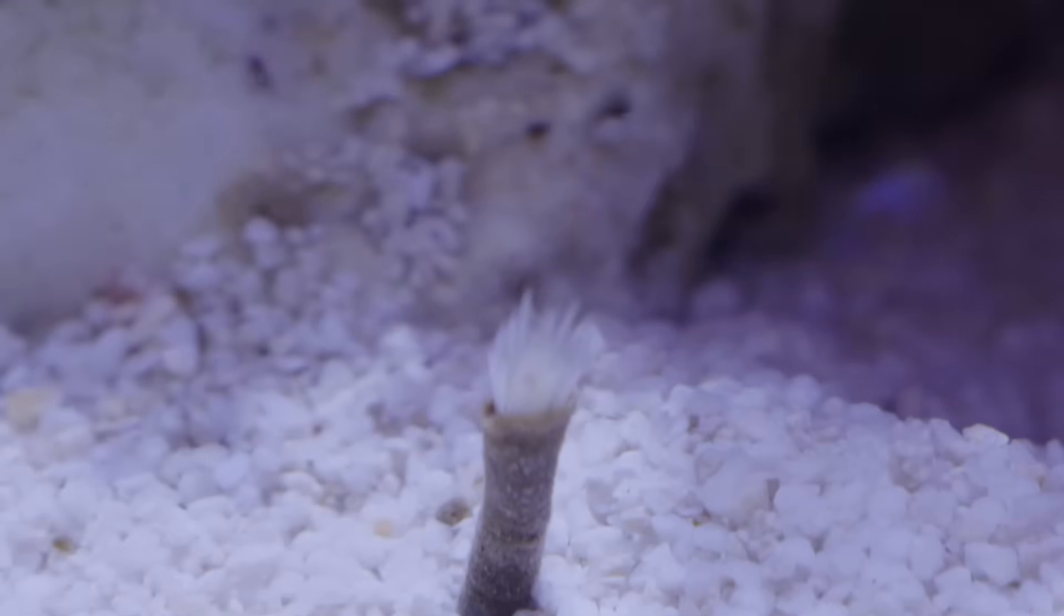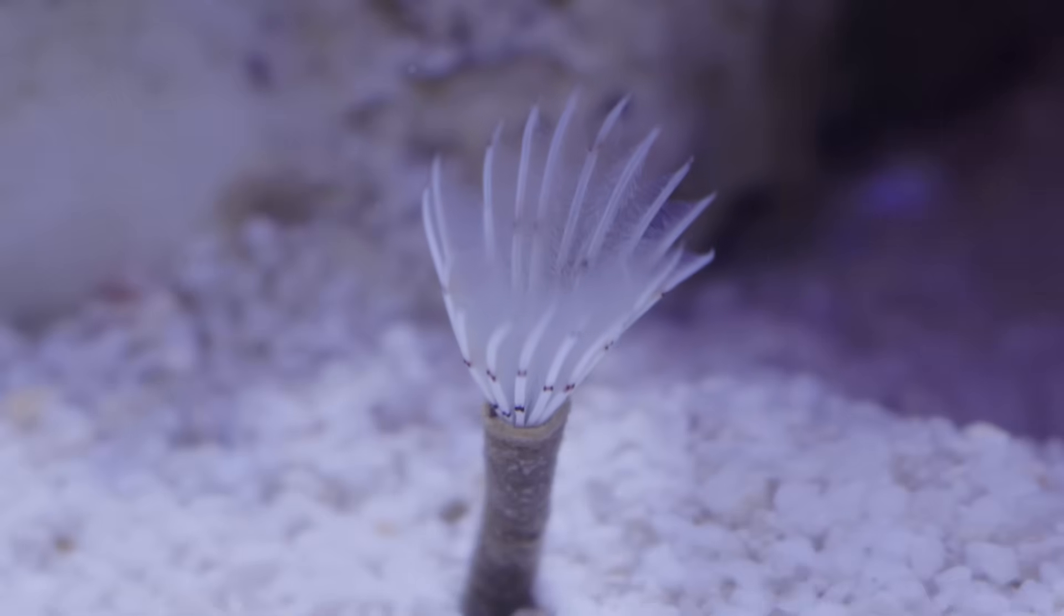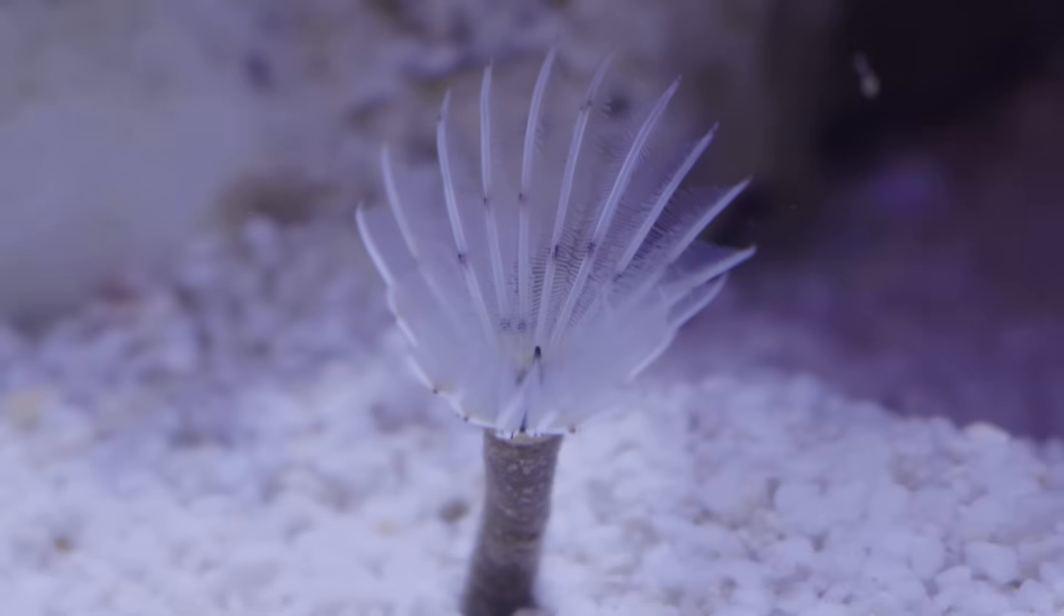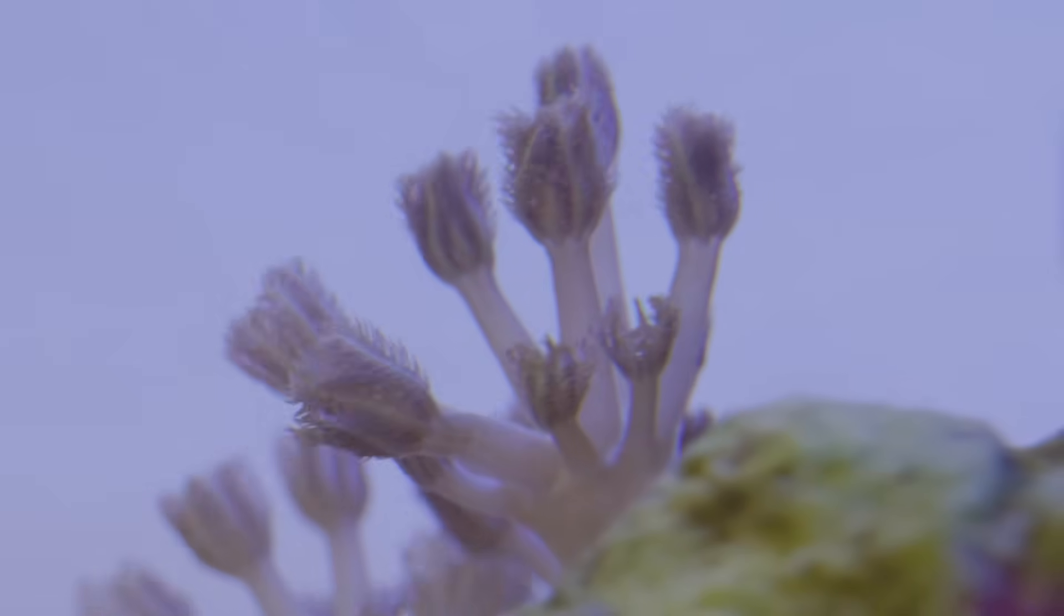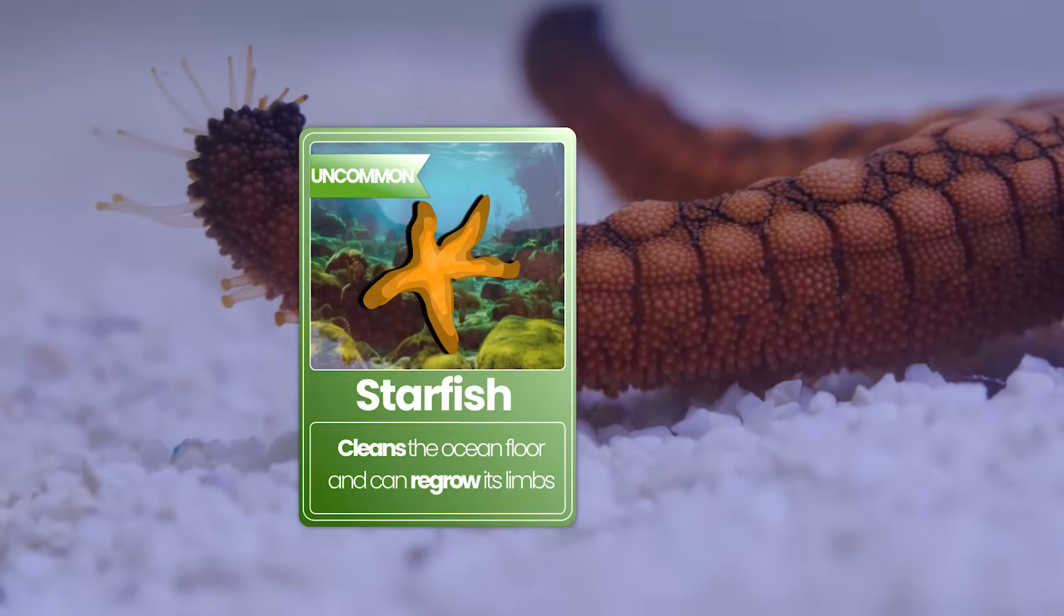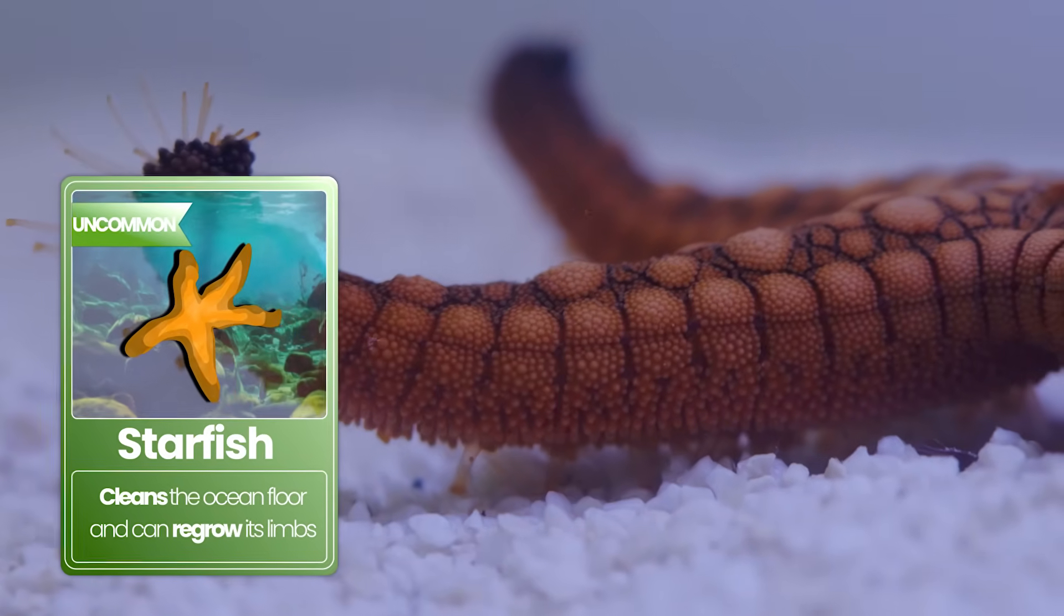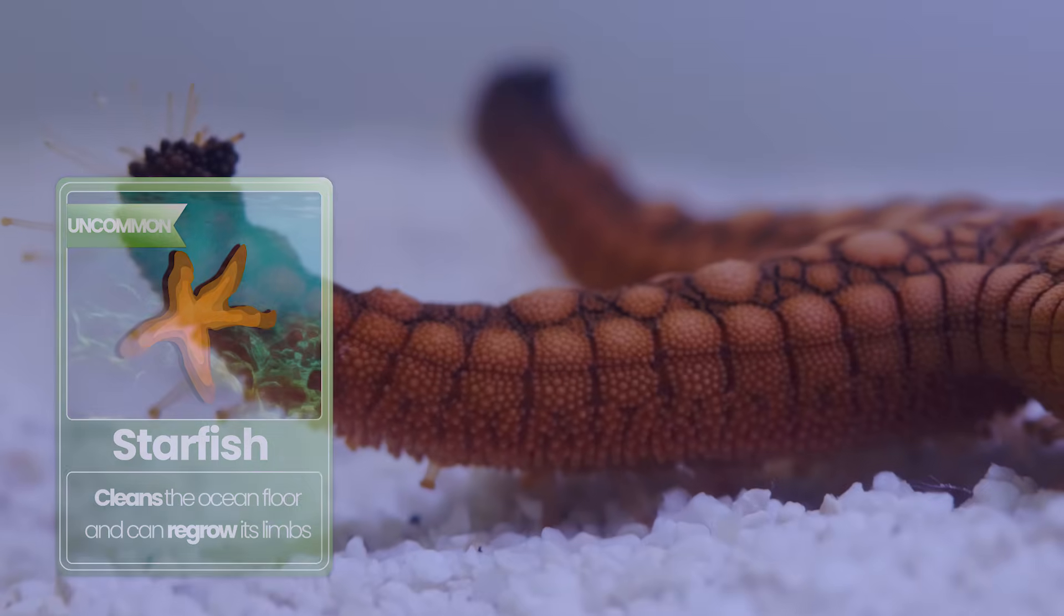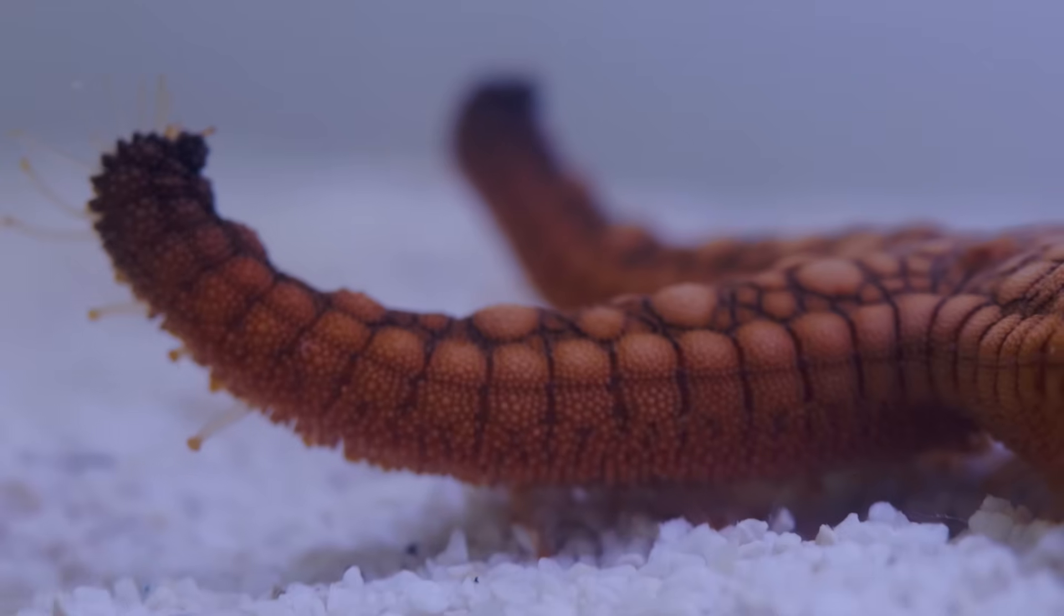And we even get some unexpected visitors. A featherworm comes out to meet its new neighbors. The xenia pulse high up on the rocks, feeding on the water column. And to help the snails keep up with all the cleaning, a starfish joins the shallow reef. It explores its new environment on tiny tube feet, moving slowly as it eats algae and small pests.